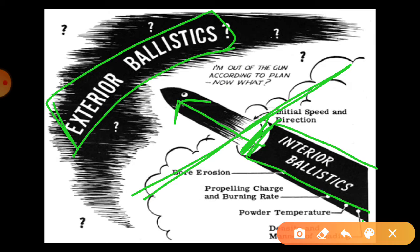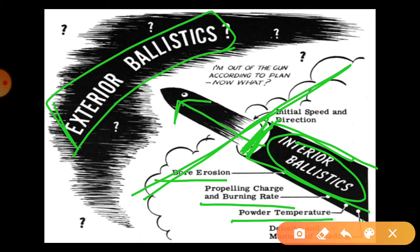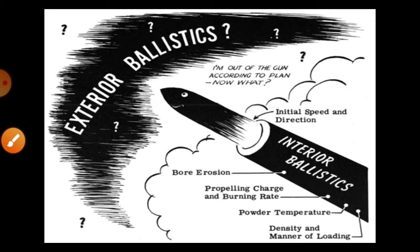जब तक यह आपकी bullet आपकी firearm के अंदर है and firing pin जो रहती है, जो आपका hammer रहता है, जो आपका firing pin रहता है वो जब primer cap को hit करती है - इसके बीच में जितनी mechanism होती है उसको हम बोलते हैं internal ballistics या interior ballistics. जब internal ballistics होता है उसमें basically जो bore रहता है उसका erosion, propelling charge and burning rate, powder का temperature, और density - इसके बारे में भी जो manner of loading होता है, यह सारा का सारा देखा जाता है.